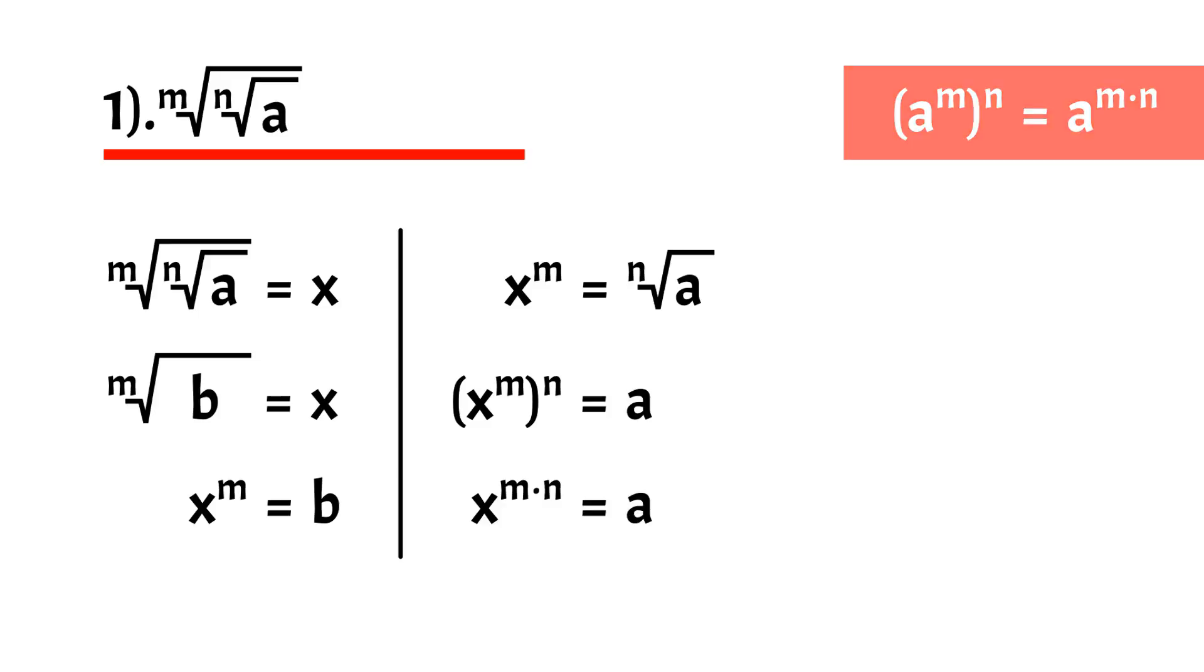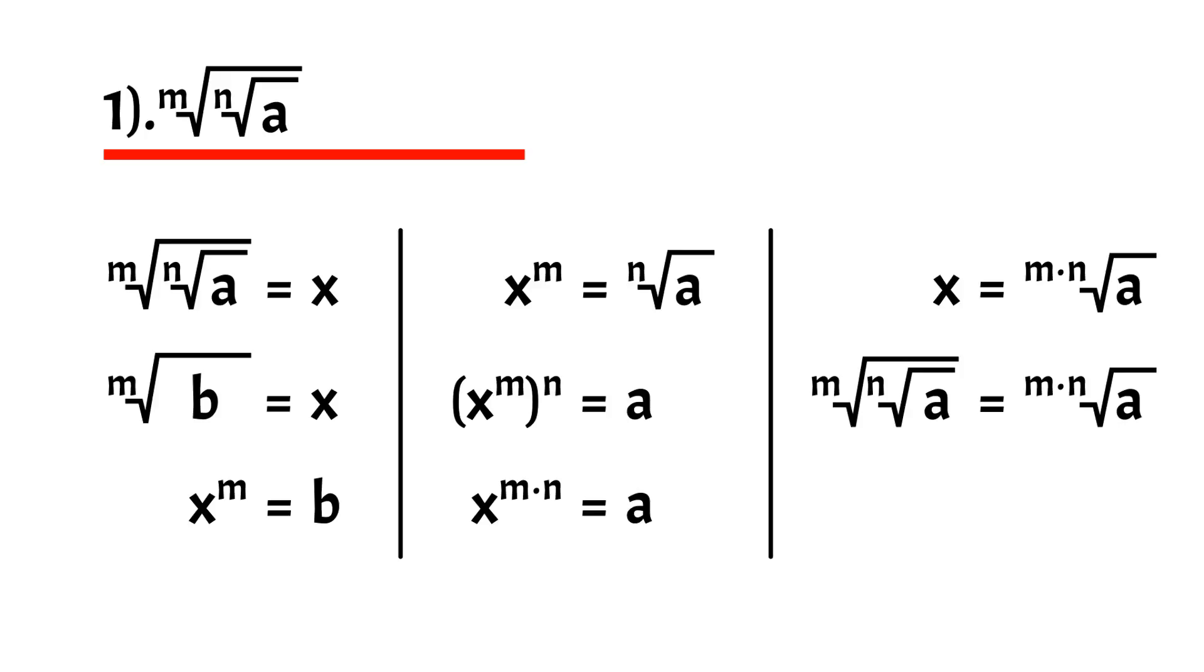Lastly, we convert the expression back to root, this time regarding the whole power as unit. So we have m times n root of a equals x, but x is our initial expression, thus we have this, our first property.